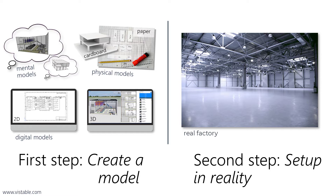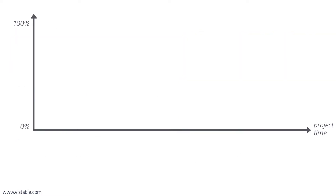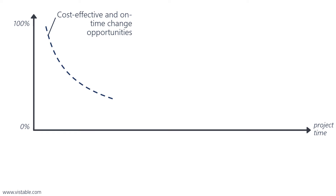The better and more accurate the model is created or planned, the better the implementation will work in reality. There is a simple correlation behind this: cost-effective and on-time change opportunities decrease over the project duration. Changes to a model are much easier to implement than changes to the real factory.